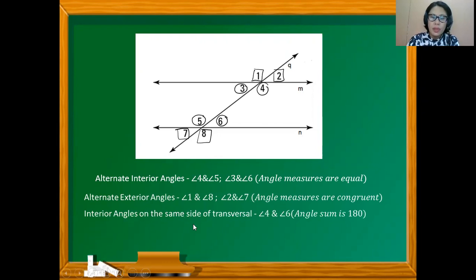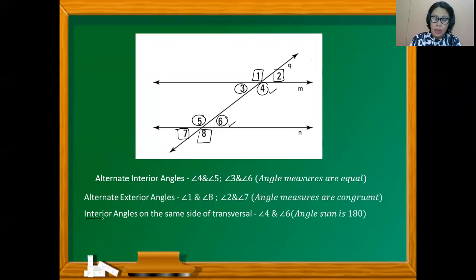Interior angles on the same side of the transversal, such as angles 4 and 6, are inside the parallel lines on the same transversal line. This also applies to angles 3 and 5. Their angle sum — the sum of the two pairs — is 180.